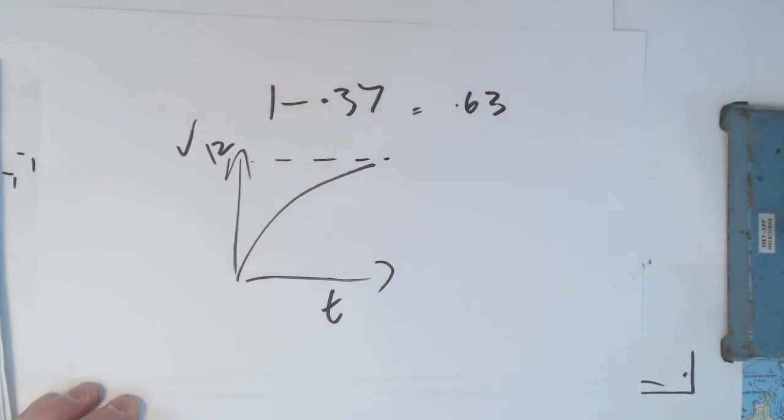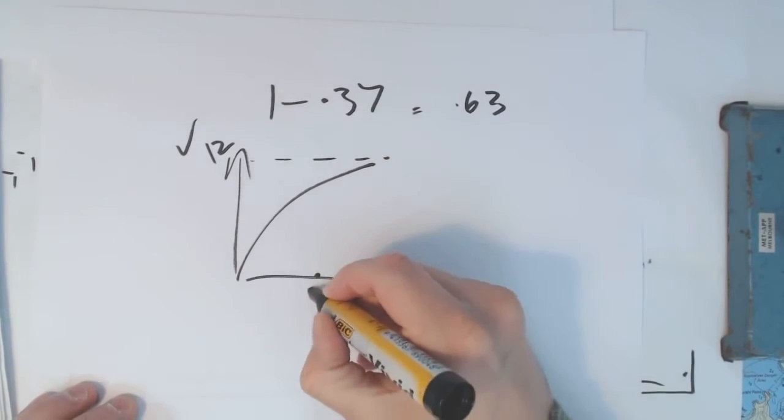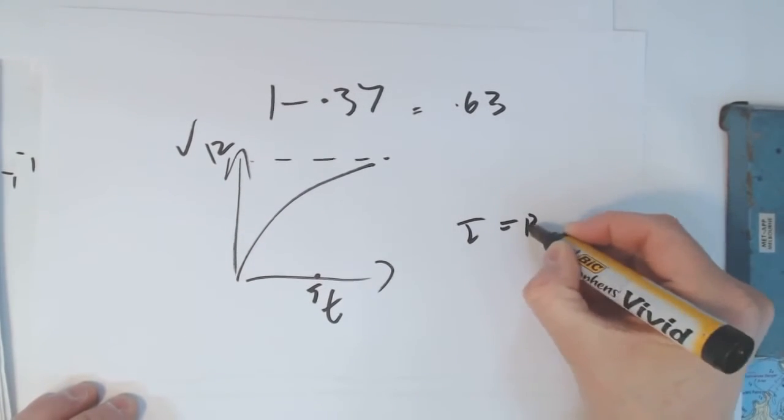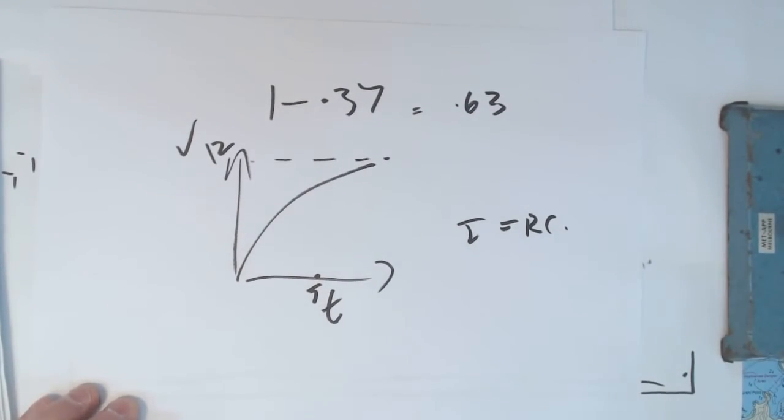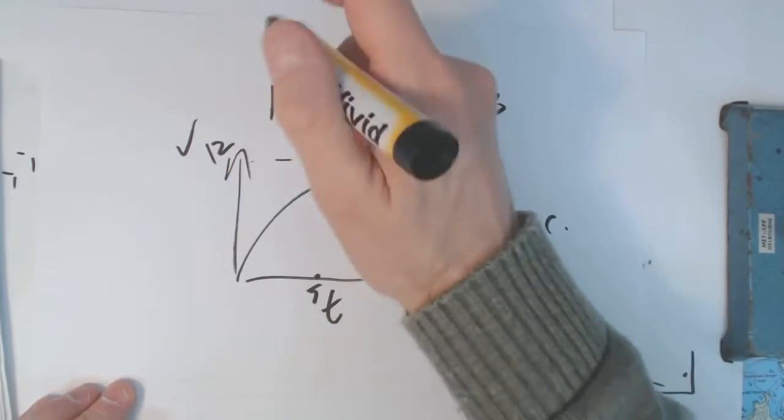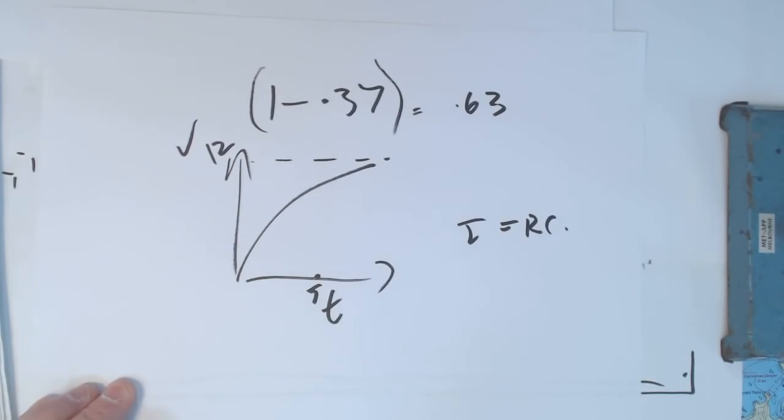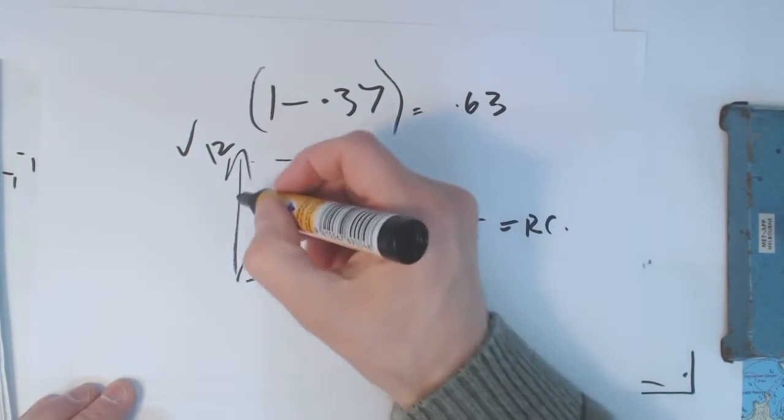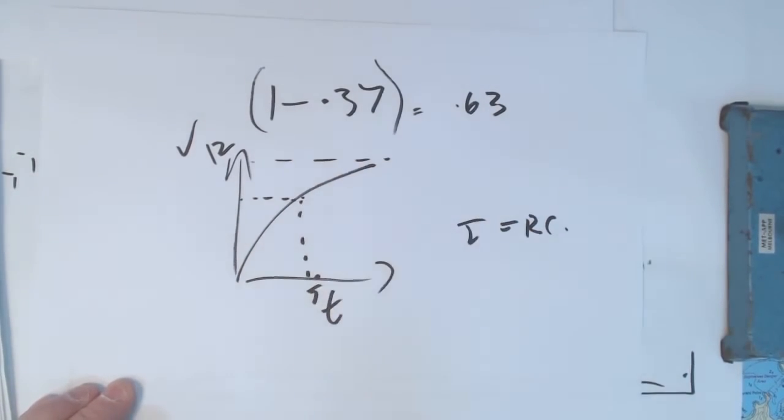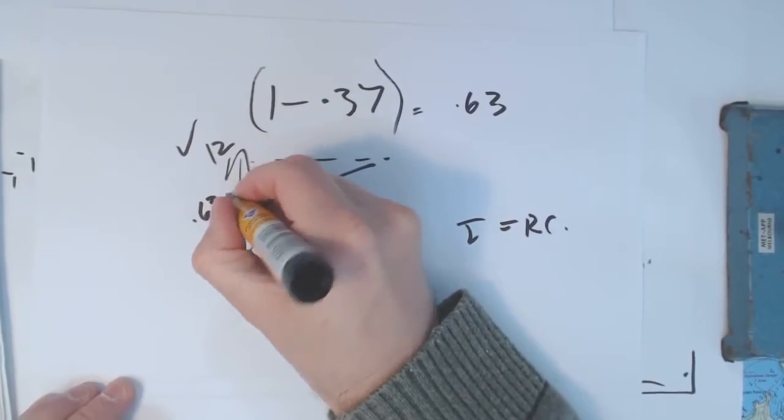So like an asymptote, getting closer and closer. You want to know after one time constant, where is things at? Time constant being RC. After one time constant, it's going to be at 1 minus 0.37 or 0.63 of its final value. So we can go after one time constant, it'll be at 0.63.